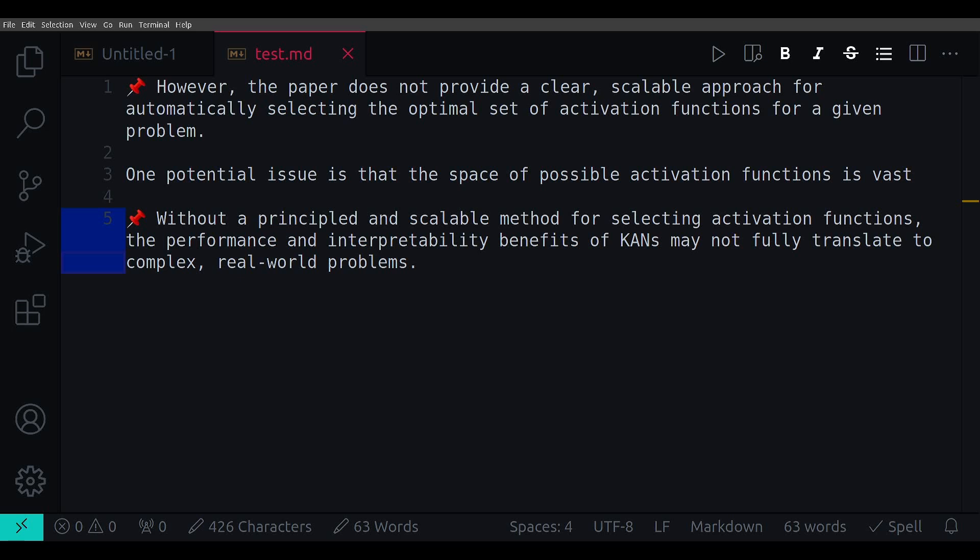The paper mentions using machine learning techniques to select activation functions but does not provide specific details or experiments demonstrating the effectiveness of this approach. More research is needed to develop practical algorithms for learning the optimal set of activation functions. Because without a principled and scalable method for selecting activation functions, the performance and interpretability benefits of CANs may not fully translate to complex real-world problems. The manual effort required to tune the activation functions could limit the applicability of CANs.